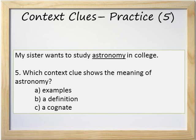Number 5: My sister wants to study astronomy in college. Which context clue shows the meaning of astronomy? A. Examples. B. A definition. Or C. A cognate. The answer is C, a cognate. Remember that a cognate is a word that sounds similar or the same and means the same thing in two different languages. In Spanish, astronomía is a cognate of astronomy.